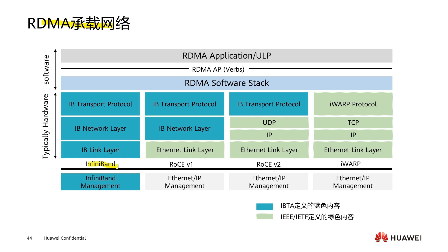For the network that RDMA carries, initially RDMA was a technology implemented on the InfiniBand network. InfiniBand's technology is more advanced, but its price is quite high. Later, a manufacturer in the industry ported RDMA to traditional Ethernet for use, reducing the cost and promoting the popularization of RDMA technology. On Ethernet, based on the difference in the integration degree of the protocol stack, it is divided into IWARP and RoCE technologies.